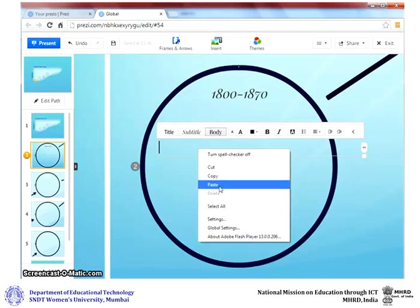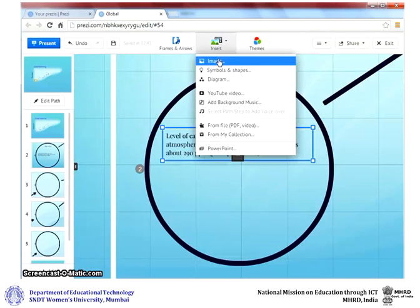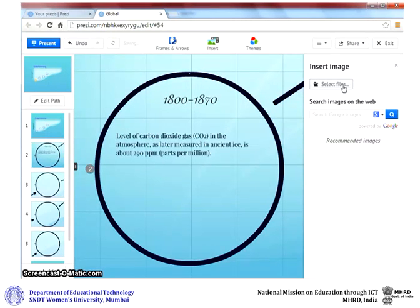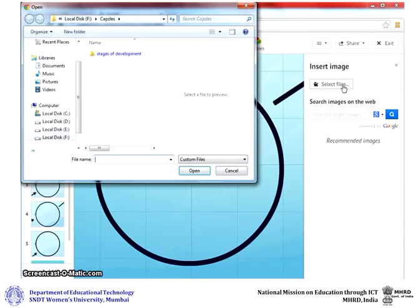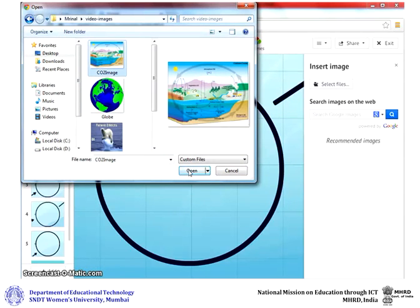To add an image to a frame, click on insert image. Click on select files. Select the image that you want to insert and click open.